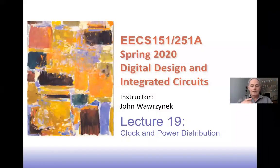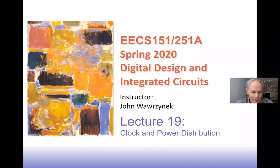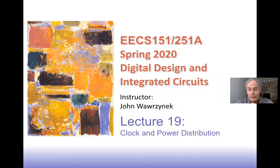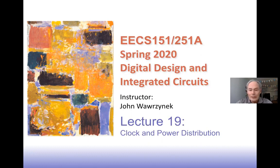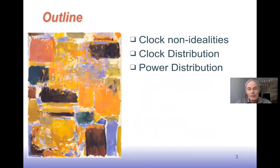This is lecture 19: clock and power distribution. This is a significant topic shift — it's about the physical realities of building real chips, specifically the special care needed for distributing clock signals and power signals, and the consequences of non-ideal clock and power distribution. The three topics are clock non-idealities, clock distribution, and power distribution. This is more about implementation than logic design, but it's important for anyone building chips or understanding FPGA limitations.